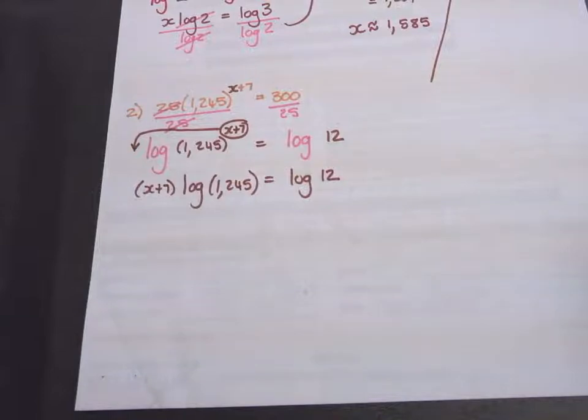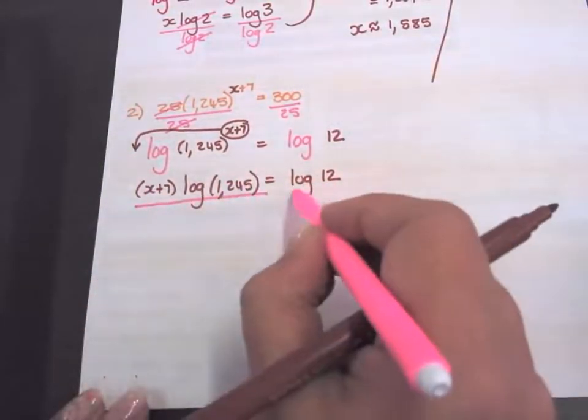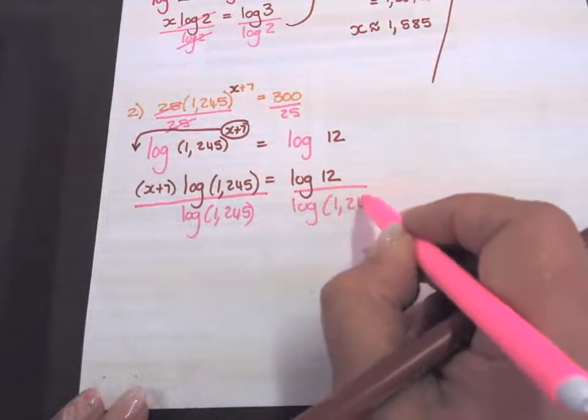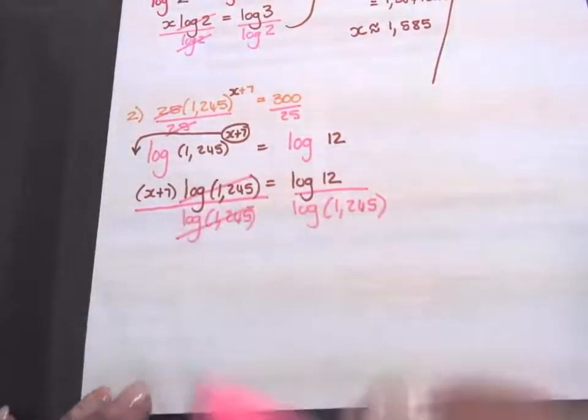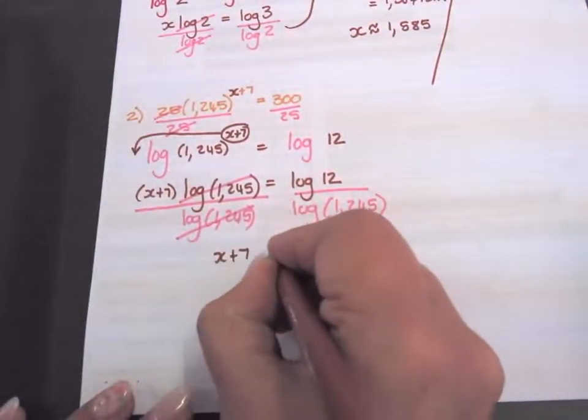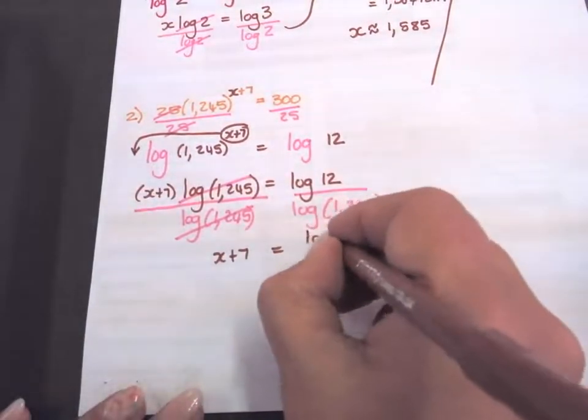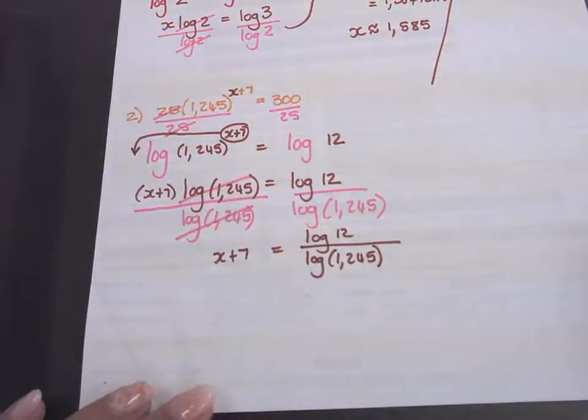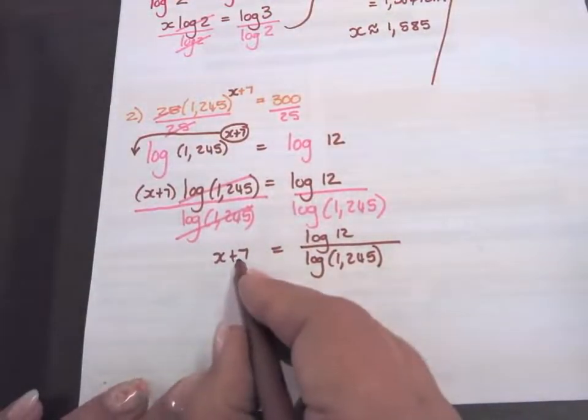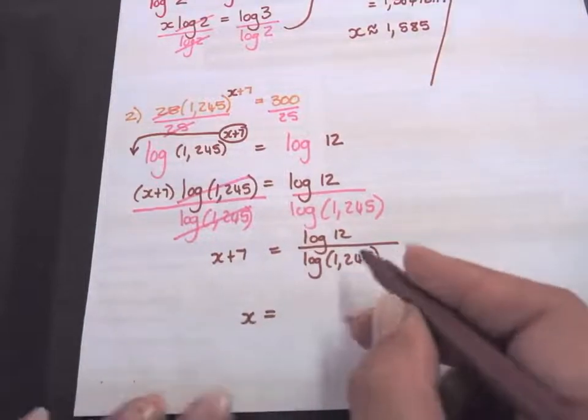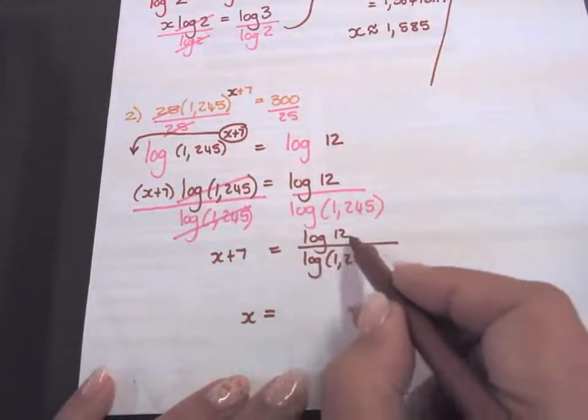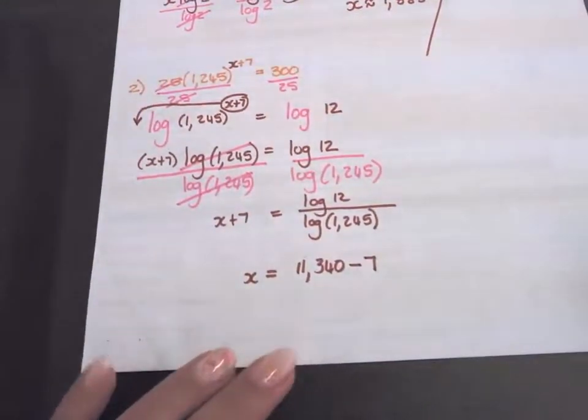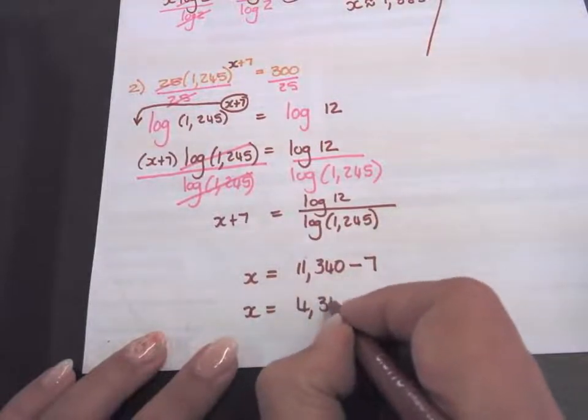I want x plus 7 alone, so divide both sides with log 1.245. They cancel out, and x plus 7 equals log 12 over log 1.245. We want the x alone, so take the 7 to the other side of the equal sign. x equals, if you type that in, you will get 11.340 minus 7. So x will be equal to 4.245.